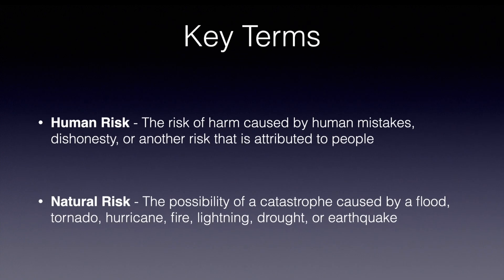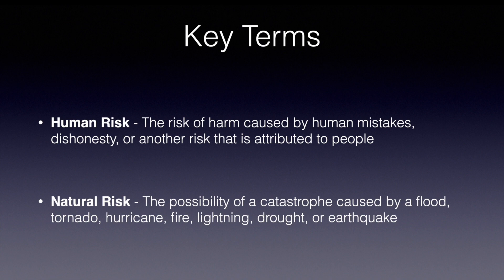Human risk is the risk of harm that is caused by human mistakes, dishonesty, or another risk that is attributed to people. And a natural risk is the possibility of a catastrophe that is caused by a flood, tornado, hurricane, fire, lightning, drought, or earthquake.